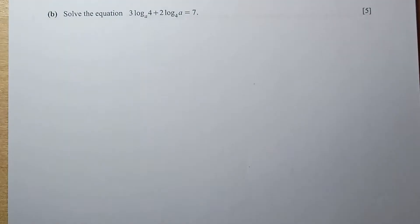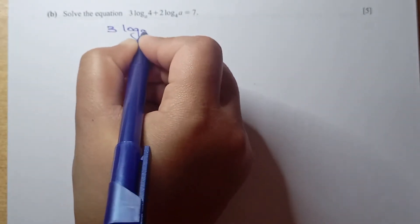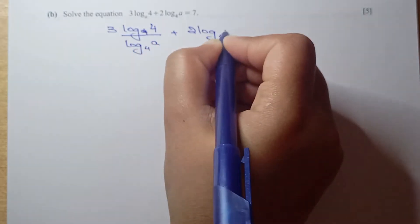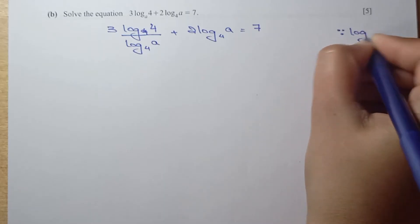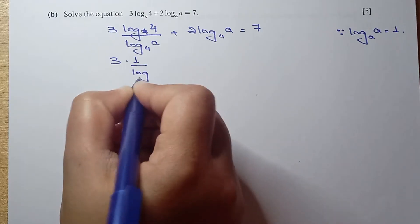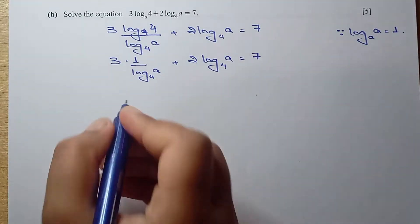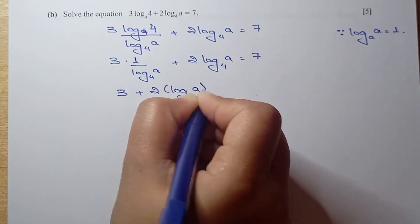For part b, solve the equation. We use the change of base formula for log base A of 4. So we have 3 times log 4 of 4 over log 4 of A, plus 2 log 4 of A equals 7. Since log 4 of 4 equals 1, we have 3 times 1 over log 4 A, plus 2 log 4 A equals 7. Multiplying through by log 4 A gives: 3 plus 2(log 4 A) squared equals 7 times log 4 A.